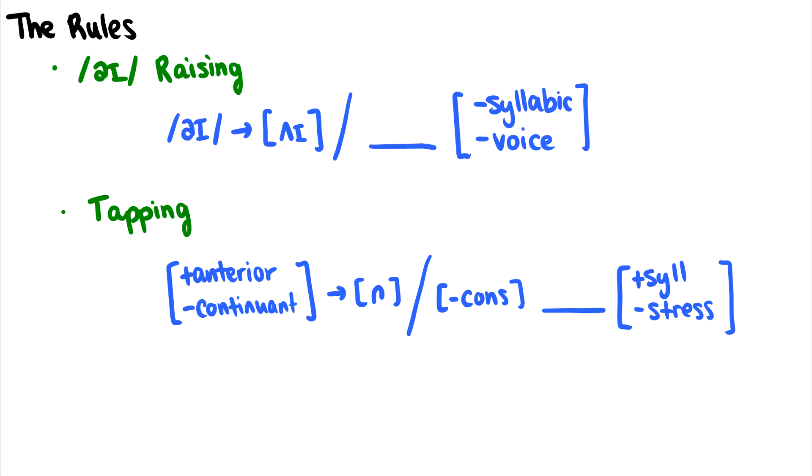The second rule is called tapping. It takes a plus anterior minus continuant and makes it a tap. That is going to be between sounds that are not consonants and when syllables without stress come after. It's kind of an example just to show you because I think examples are better than me explaining it over and over again with features.